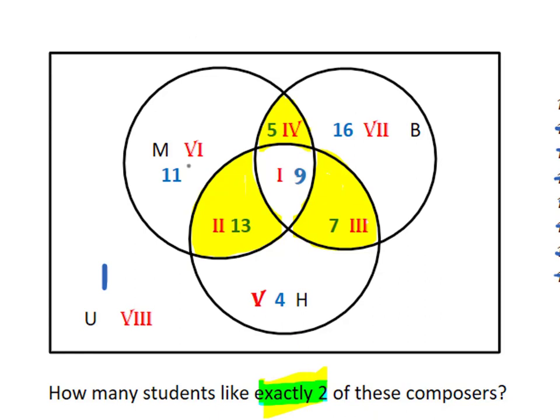So you would have to add up the number in region four plus the number in region two plus the number in region three, which is going to be 5 plus 13 plus 7 equals 25. There are 25 students who like exactly two of the composers. Now, if I said at least two, you'd throw in those other nine, but I didn't. I said exactly two.